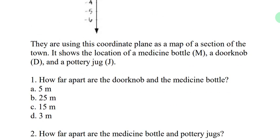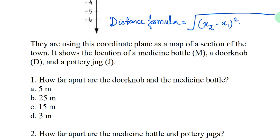First question: How far apart are the doorknob and the medicine bottle? We have to find the distance. What is the distance formula? Let's look at that. The distance formula is equal to the square root of x2 minus x1 whole square plus y2 minus y1 whole square.